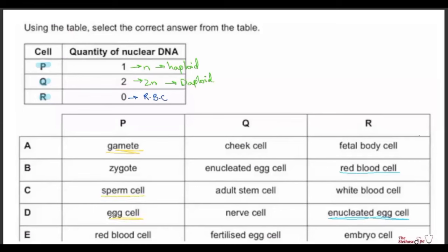Q is just any body cell. Checking the answer options: option A has Q as a cheek cell — fine, that's a body cell. We also have an enucleated egg cell, a stem cell like bone marrow cells, nerve cells, and a fertilised egg cell — all diploid body cells. The option that correctly covers all three cells P, Q, and R is option D, which is the correct answer.